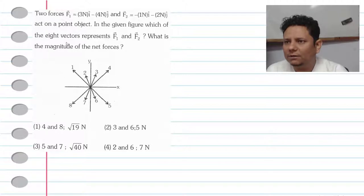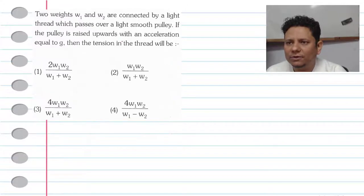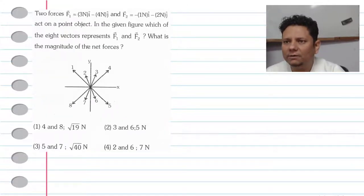In the given figure, which of the eight vectors represents F1 and F2? Let us know which figure represents F1 and F2. The second is what is the magnitude of the net forces. So when we add them, F will be equal to F1 plus F2. What will be the magnitude of the net force?